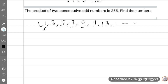If one is x, the second consecutive odd number is x plus two. Now we have solved this question.